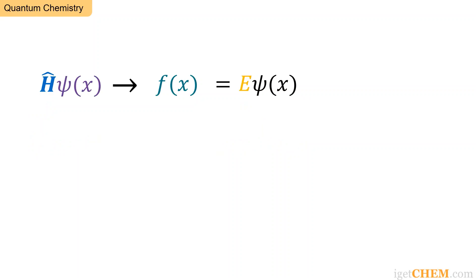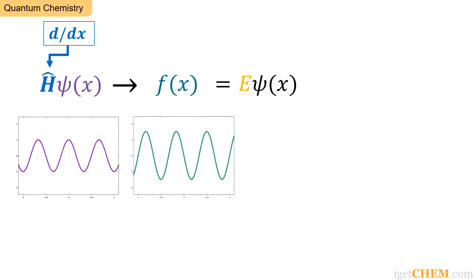So to distinguish between operators and numbers, we sometimes put a special upside down v symbol above H. So what are some examples of operators? Well, here is one. d by dx. d by dx, when applied to the purple psi of x function, morphs it into the green f of x function.